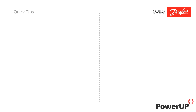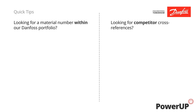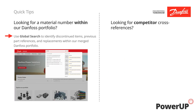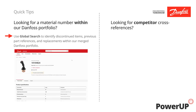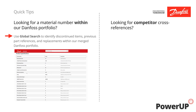Here are some quick tips for finding material numbers. You will find product portfolio changes in Global Search, with a separate tool addressing cross-references for competitor parts. Global Search, available at the top of every page, is best used for product changes within the DANFS portfolio.